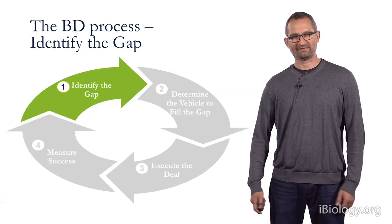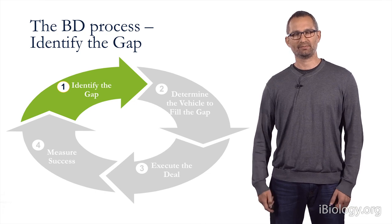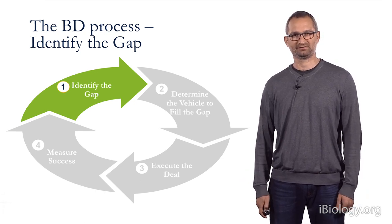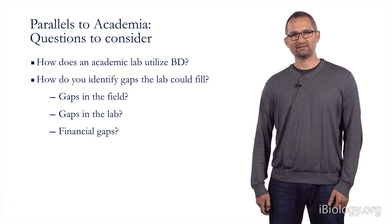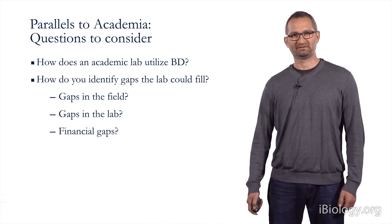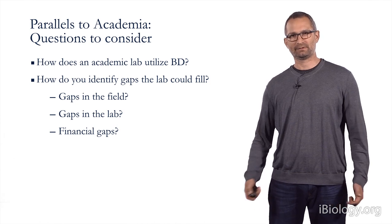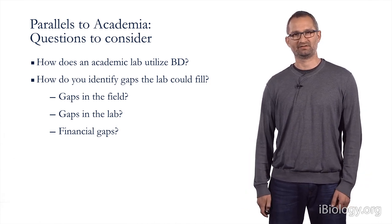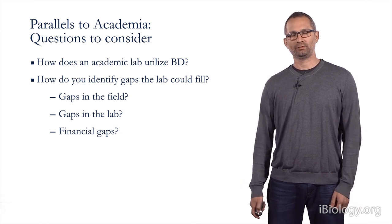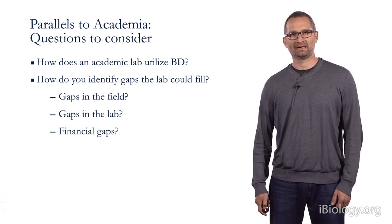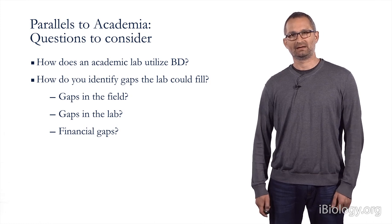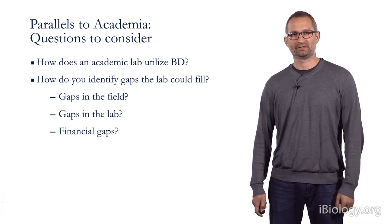In the first half of the presentation, you learned about how companies identify various gaps that can hinder the development of their products. In academia, we can use very similar concepts, because the development of an academic lab actually has many parallels to the development of a company. For example, it's important for an academic lab to continually survey the field and identify gaps that can be met by the laboratory.